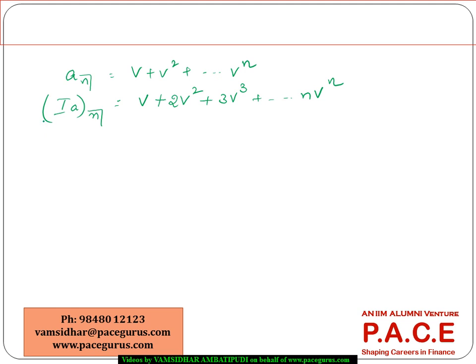Now, if I want to simplify this, I will multiply this by 1 plus i. Let's say I multiply this with this. v is nothing but 1 by 1 plus i. So this becomes 1 plus 2v plus 3v squared plus so on, nv power n minus 1.